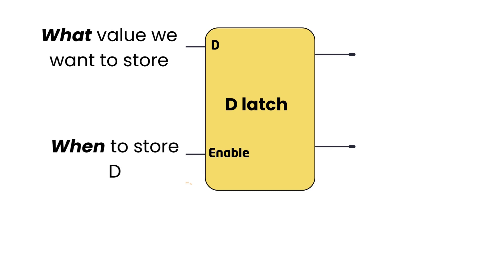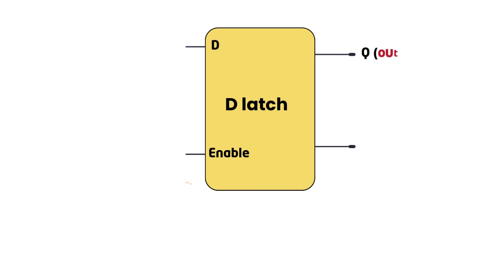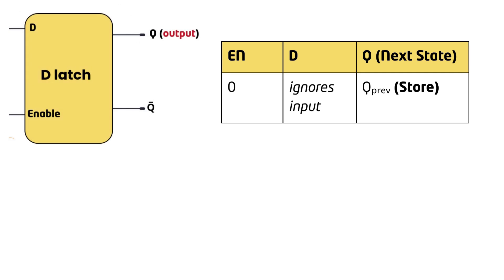In many cases, enable is driven by a control signal from another part of the circuit, such as a microcontroller, CPU, or memory controller. The D latch has two outputs: Q is the stored value, and Q bar is the inverted stored value. Now how does the D latch work? When enable equals 0, the latch ignores the D input and holds on to its last stored value. In other words, it remembers its previous state.